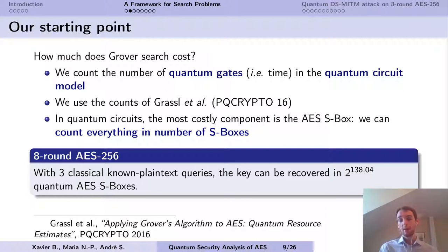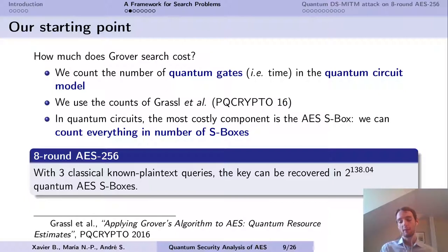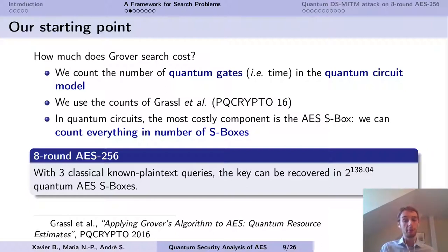If you consider a quantum circuit for AES, it turns out that the most costly component is the S-box, because the S-box is a small nonlinear function which classically is most often tabulated — and that is not the case in the quantum setting, so it's the most costly component. We can count all our complexities in the number of S-box evaluations needed. Our bound for 8-round AES-256, for example, is that the key can be recovered in 2^138 S-box evaluations. So if we go below this bound, we have an attack — something better than Grover's algorithm.